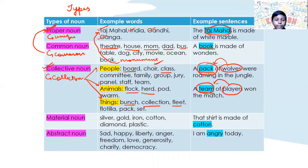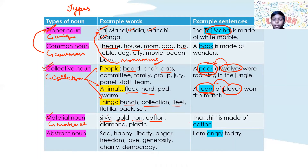Material noun tells us about the material of anything — like silver, gold, iron, cotton. Examples: silver plate, gold earrings, cotton shirt. For example: 'That shirt is made of cotton.'